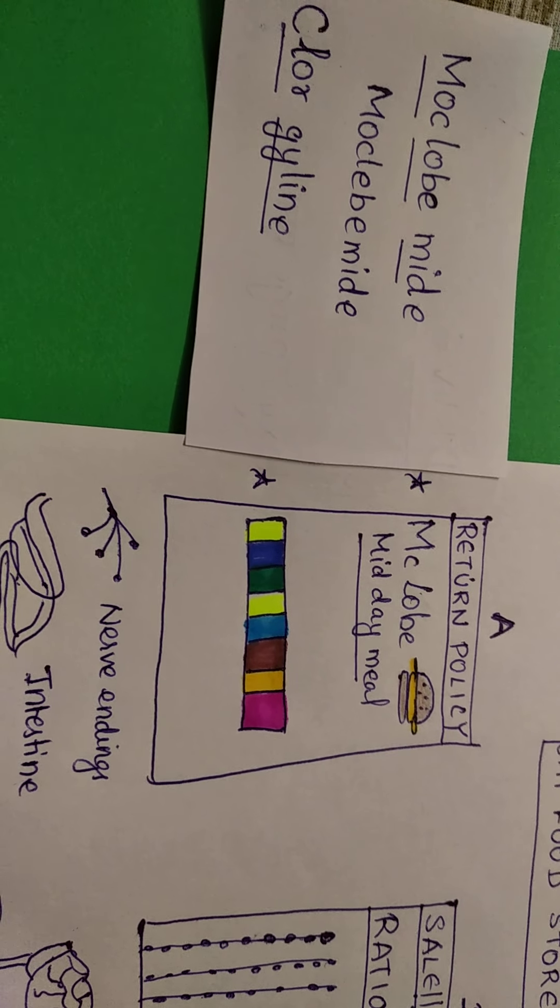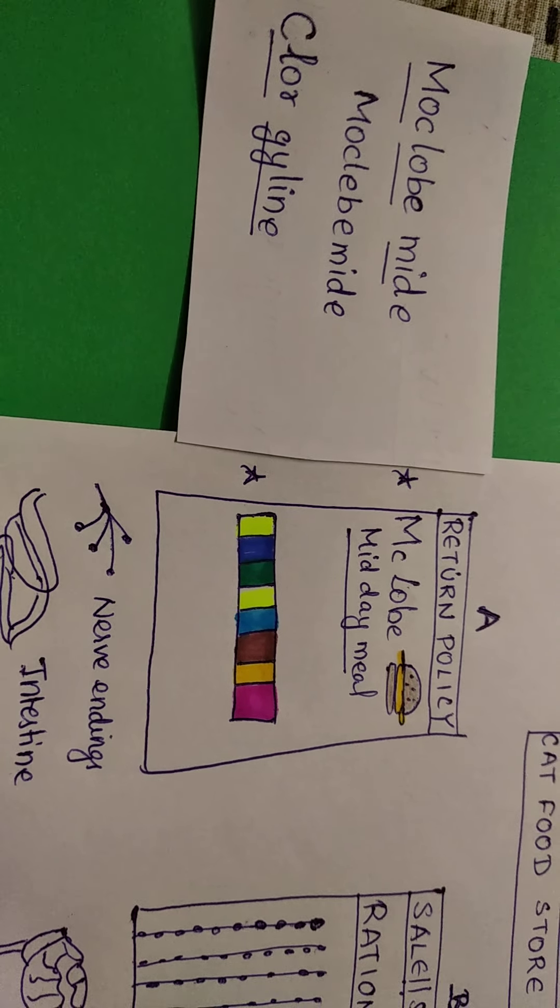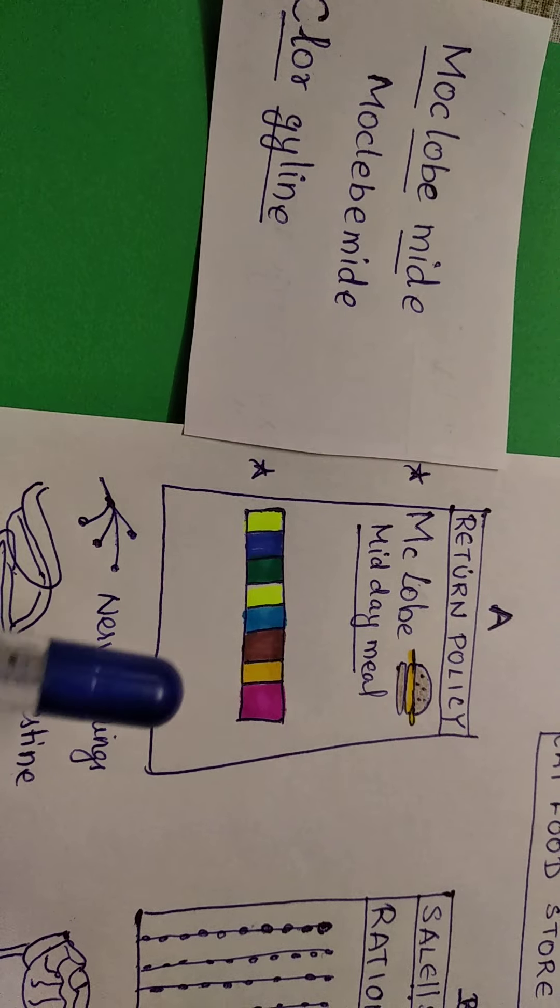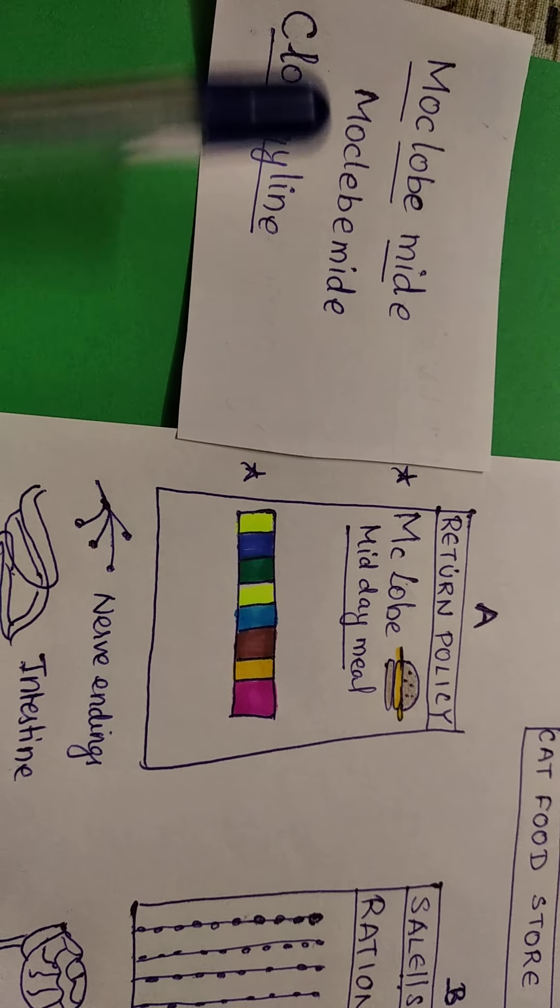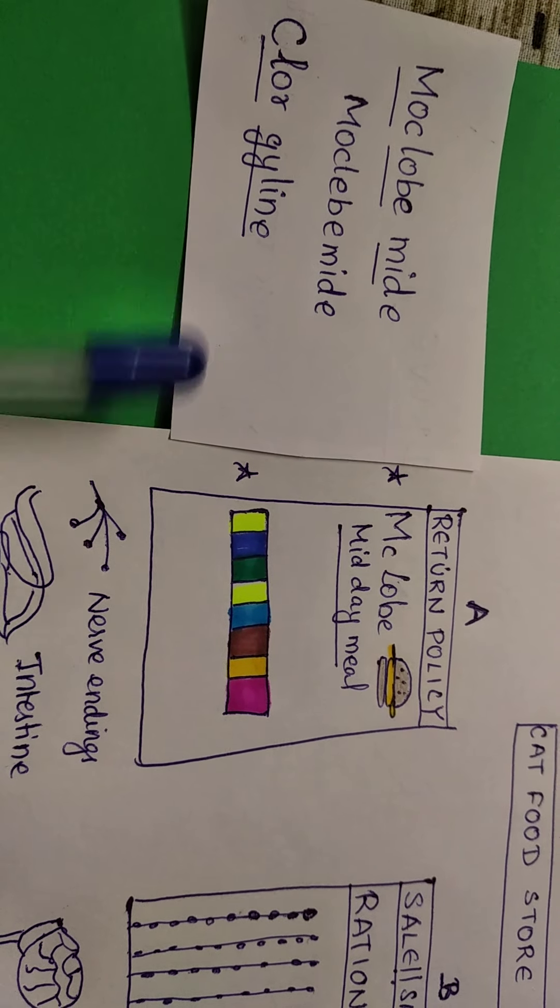And the colorful candy is Chlorgyline. Color is Chlor, and it's a line. It's G-line. So Chlorgyline.